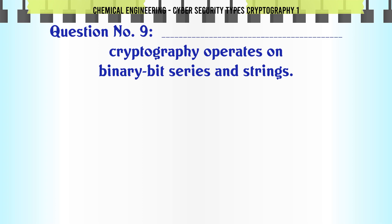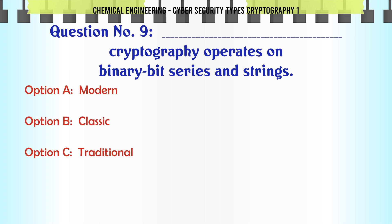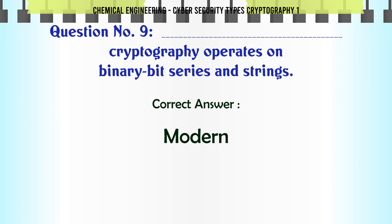Which type of cryptography operates on binary bit series and strings? A) Modern, B) Classic, C) Traditional, D) Primitive. The correct answer is Modern.